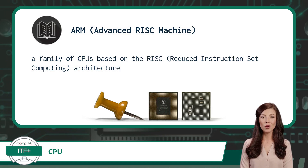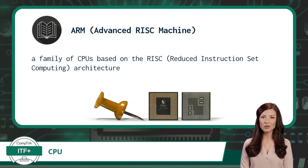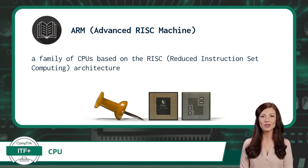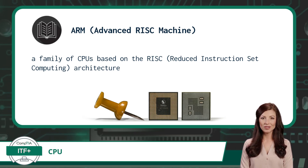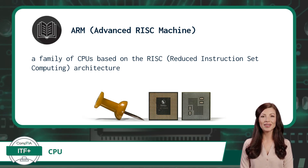Now, one last CPU type: the ARM processor. ARM stands for Advanced RISC Machine and is a family of CPUs based on the RISC, or Reduced Instruction Set Computing, architecture. ARM processors are smaller in size, generate less heat, and consume less power than processors found in laptops, workstations, and servers, making ARM processors a great candidate for mobile phones and tablets.